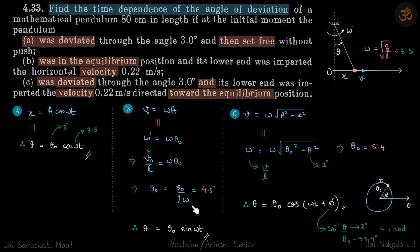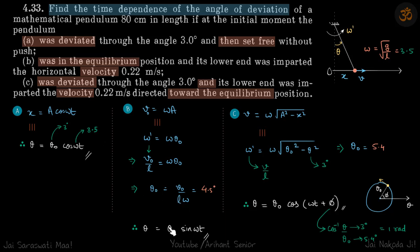Because the particle is at equilibrium at t = 0, we know our equation will be θ = θ₀ sin(ωt). We are assuming it's pushed towards the right. In terms of x, the equation would be x = A sin(ωt), and the analogous angular equation is θ = θ₀ sin(ωt). We put in the value of θ₀ and ω, and this is our answer.